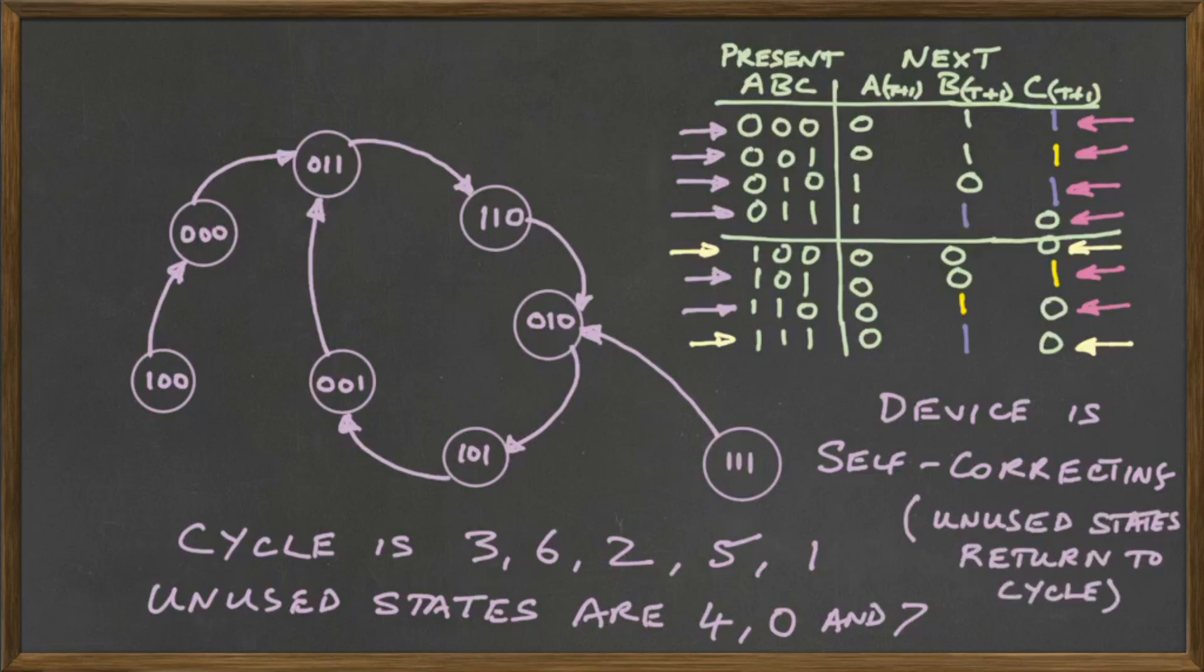So, the definition of self-correcting would be that the unused states eventually return to the cycle. Or basically, the diagram is a connected diagram with arrows connecting everything together. If we had an unused state which was not coming back to the cycle, our diagram would consist of two separate parts. It would not be one diagram, but two. We would have the cycle diagram, and then we would have another little diagram somewhere off on the side where we have states that are not returning to the cycle, in which case, the device would not be self-correcting.